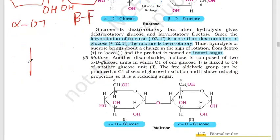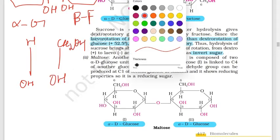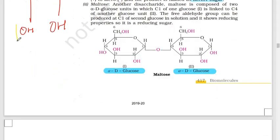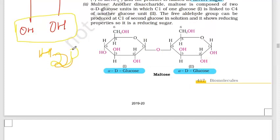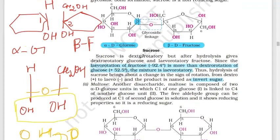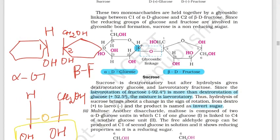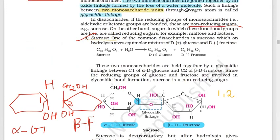We focus on the H and OH groups. When CH2OH and OH come together, a water molecule is cleaved — this is a condensation reaction forming an oxygen linkage. This is a glycosidic linkage: alpha-D-glucose at carbon one and beta-D-fructose at carbon two, forming a 1,2 glycosidic linkage. This is sucrose.